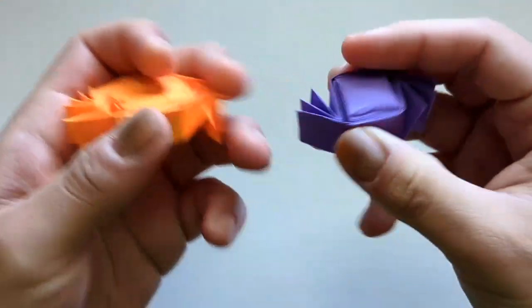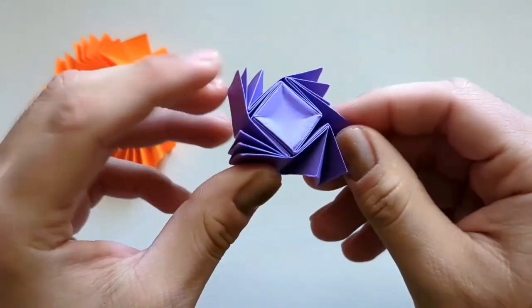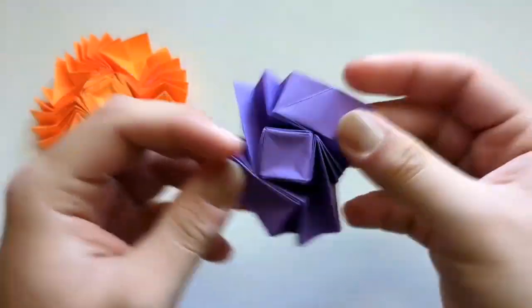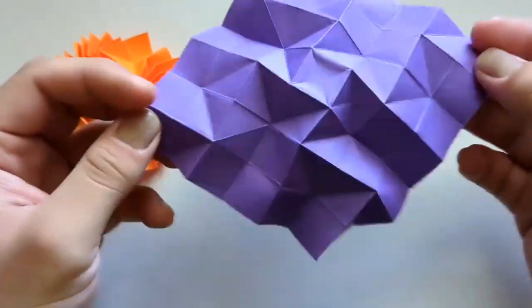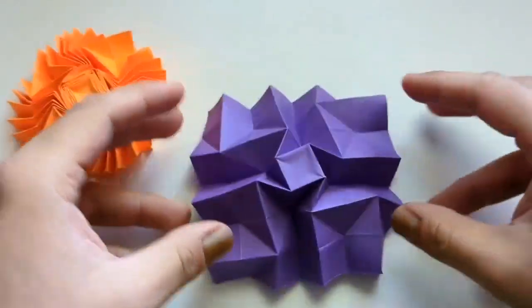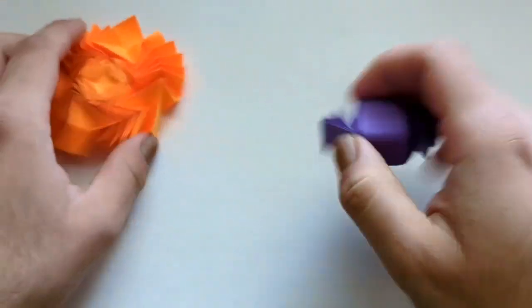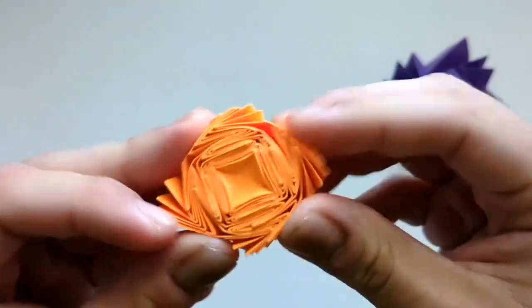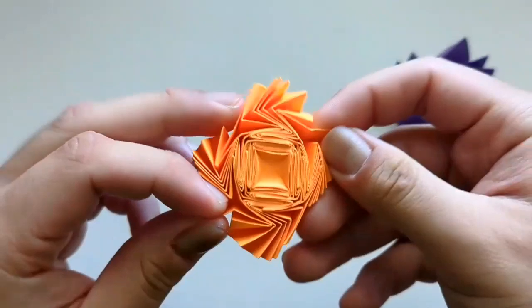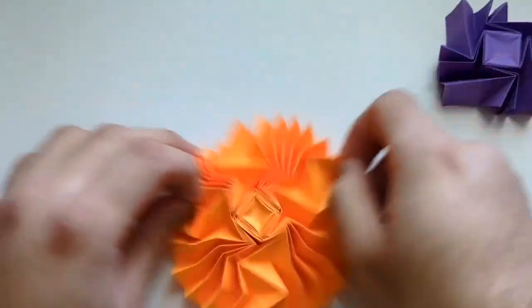I recommend you first fold the easier version from an 8 by 8 grid, then cut off one unit to have a 7 by 7 grid. I recommend you learn this one first because it has less folds, so you can get an idea how to do the 15 by 15 version which takes a bit longer.